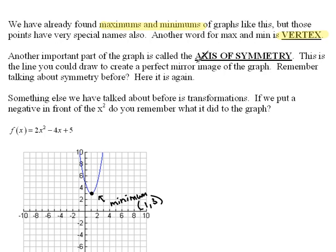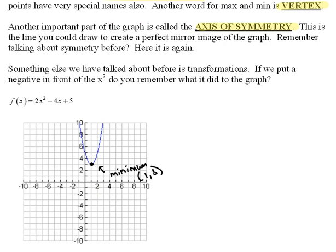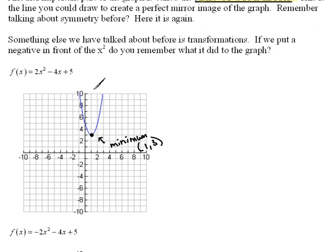Now, another important part of the graph is called the axis of symmetry. And if you'll remember us talking about symmetry before, we talked about there being this balance, where you had equivalent space on the left and the right, or the top and the bottom, depending on where you could draw that line. Well, that line itself is called the axis of symmetry. It's that line that you can draw through something and have a perfect mirror image on either side.